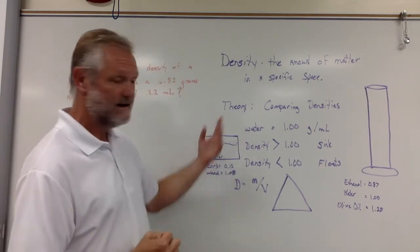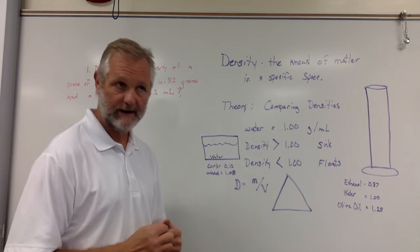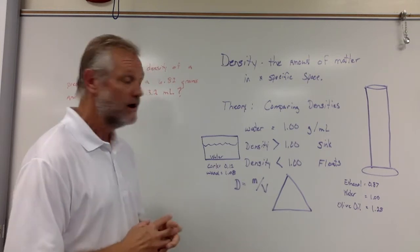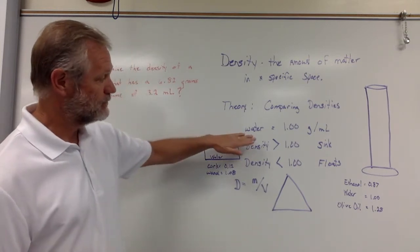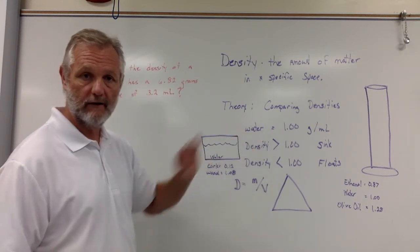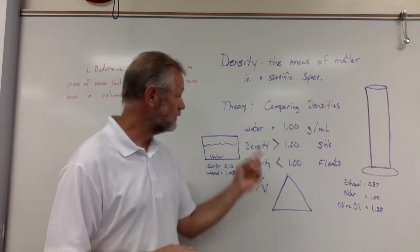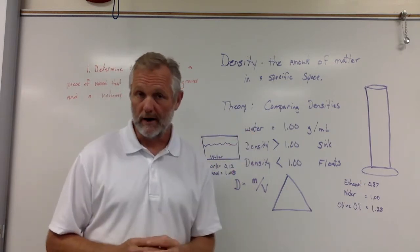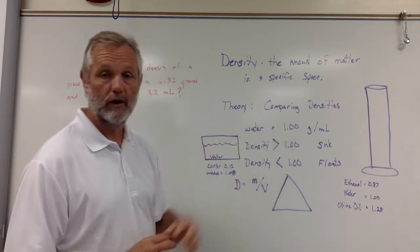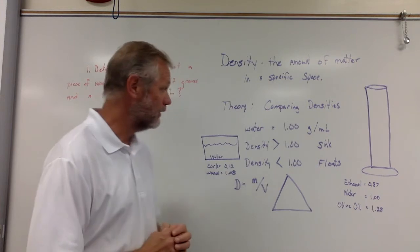Now whenever you're talking about density, you need to be able to compare densities of different objects. So the first thing I want to do is talk about the density of water. A lot of things in chemistry are compared back to our universal, which is water. The density of water is going to be one gram per milliliter.